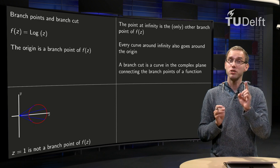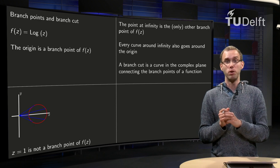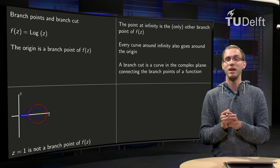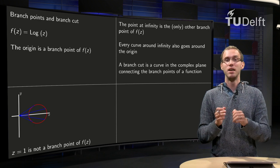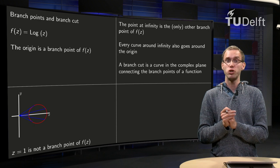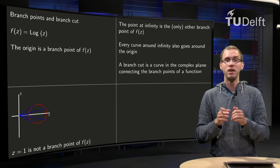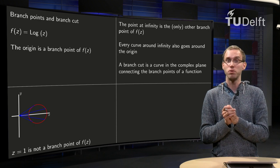However we have still one other branch point, but it is very far away, it is a point at infinity. Because what happens if you circle around the point at infinity? You can visualize it in terms of the Riemann sphere.